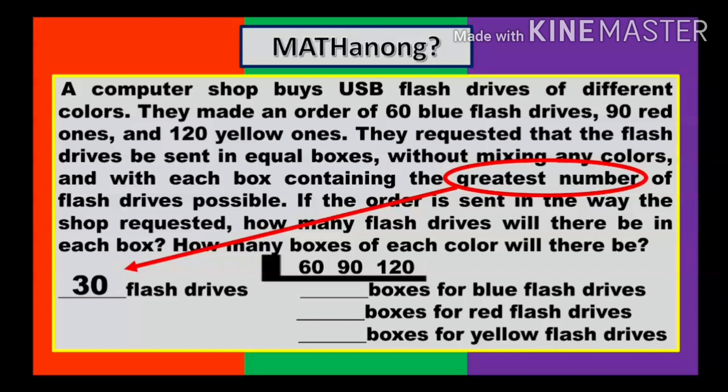We have another question there. How many boxes of each color are needed? Okay, let's answer. For the blue flash drives, there are 60. If one box contains 30, what will you do? Yes, you have to divide. 60 divided by 30 is 2. 2 boxes for blue flash drives. What about for red ones? There are 90 red. If one box holds 30, what will you do to get the number of boxes? Divide again. 90 divided by 30 equals 3. 3 boxes for red flash drives. Now, what about for yellow? 120 divided by 30. What's the answer? Yes, you got it: 4. So we solved the problem now.